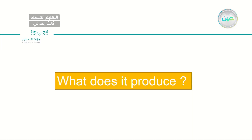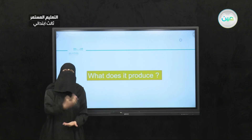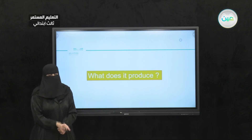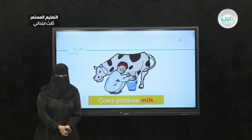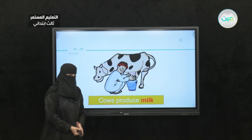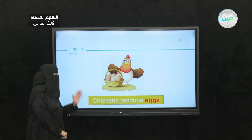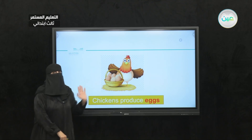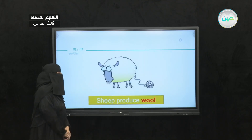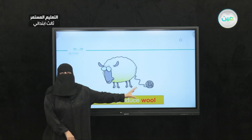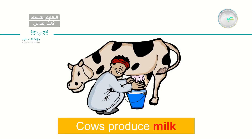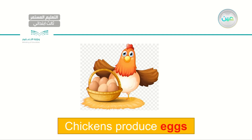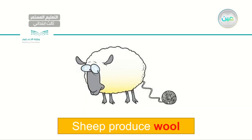Now, to answer the question: what does it produce? All the animals here are on this planet to help us as humans carry on living, so they produce different kinds of things. Cows produce milk — sometimes you can also get meat from the cow. Chickens produce eggs. And sheep produce wool — we can use wool to make our outfits, jackets, clothes, and so on. Let's revise: cows produce milk, chickens produce eggs, and sheep produce wool.